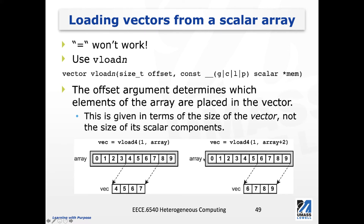In the second example, the pointer is array plus 2. That is to say, we want to start from that location to find the initial values for this vector. Because we use offset 1 again, starting from array+2, the first four elements are for offset 0, and the next four elements will be used to initialize this vector, VAC.